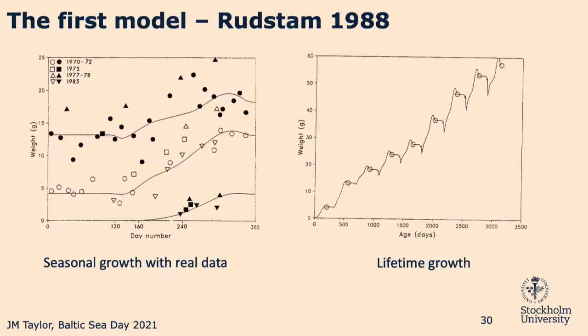Another application is modeling growth over the entire fish's life rather than just one growing season. This shows eight years of a fish's life — about 3,500 days on the x-axis — and you can model how it changes in weight. This is great because we wouldn't be able to track the same herring over its entire life in situ, so this is a powerful tool to answer questions like that.